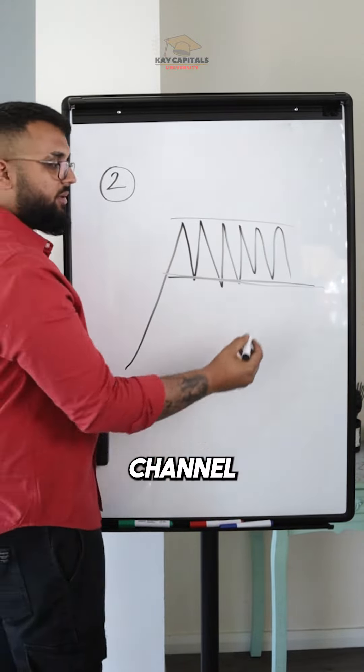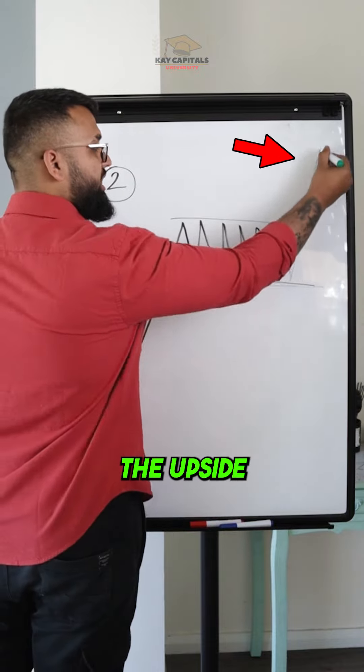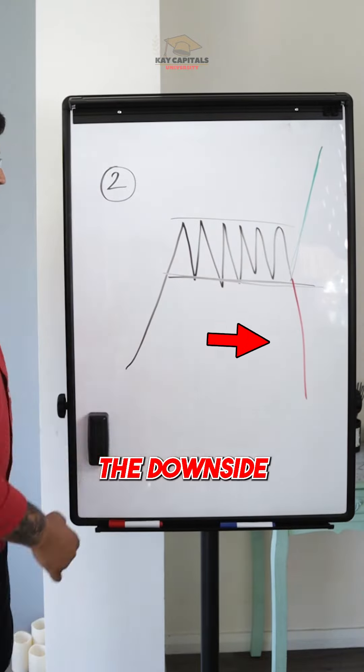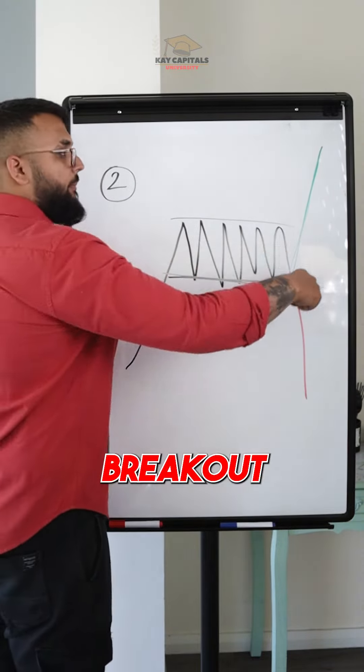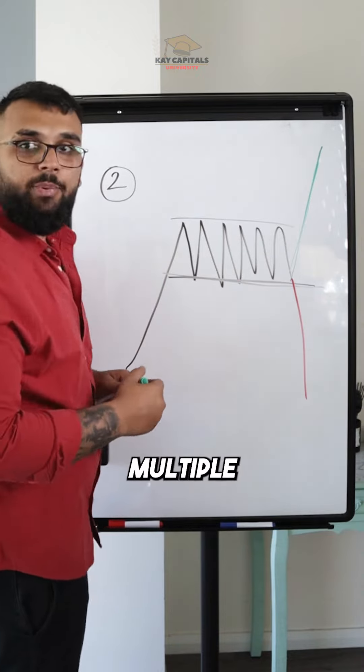Second is you see impulse, then you see consolidation. It consolidates in this channel and now two different things can happen. You can either go towards the upside or you can break towards the downside. This is called impulse, consolidation, breakout or breakdown.